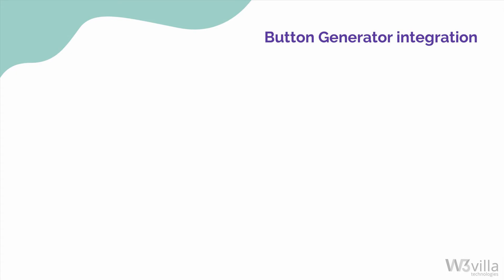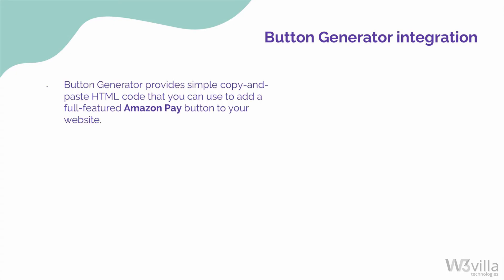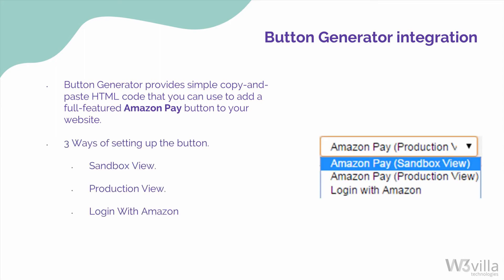Now let's take a look at the Button Generator offered by Amazon. The Button Generator integration for Amazon Pay and Login with Amazon offers a simple copy-and-paste HTML code that you can use to add a full-featured Amazon Pay button to your website. This Button Generator allows you to set up the button in three ways: one, for sandbox testing, which can be used for testing the integration; second, the button for the production view, that is the functional button to be used by customers; third, a button for logging into an Amazon account to process the payment.